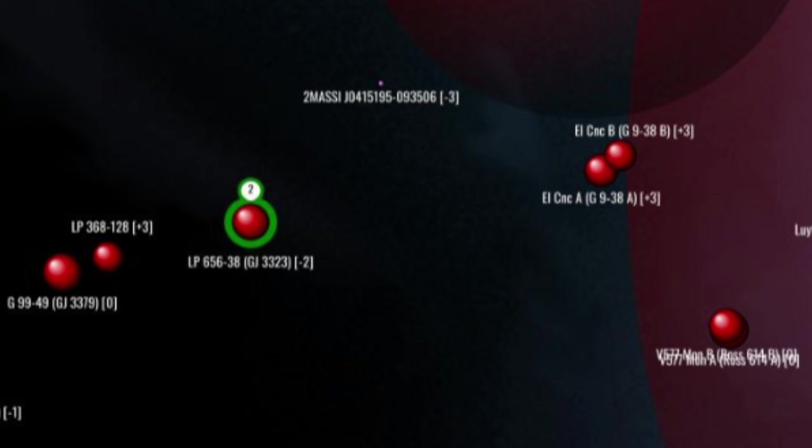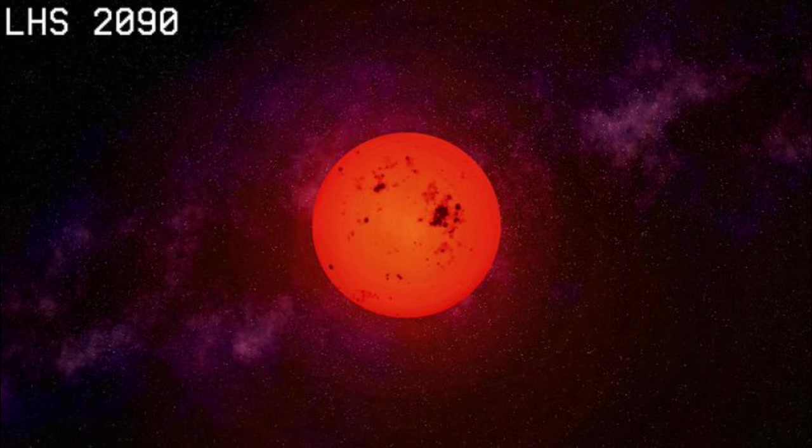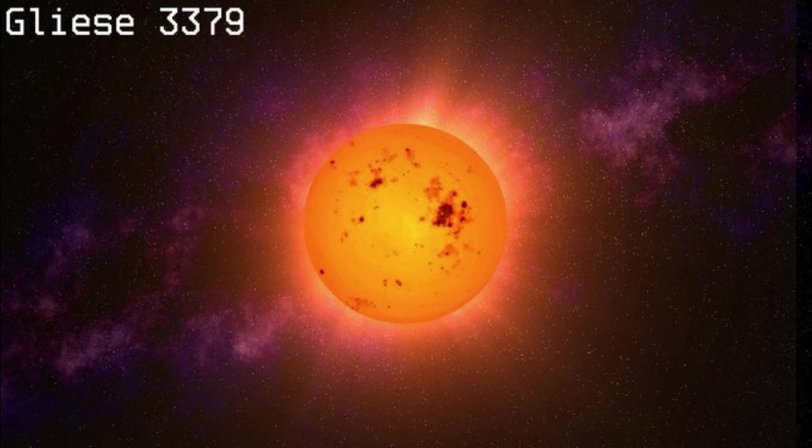Rimward of 3323, we arrive at what appears to be a red dwarf binary, but is in fact two single stars separated by three parsecs. The first, LHS 2090, is a dim red dwarf about a tenth the size of the Sun. The second, Gliese 3379, a red dwarf about a quarter of the mass and radius of the Sun, is classed as a flare star. It has a very active surface and a strikingly fast rotation of less than two days.